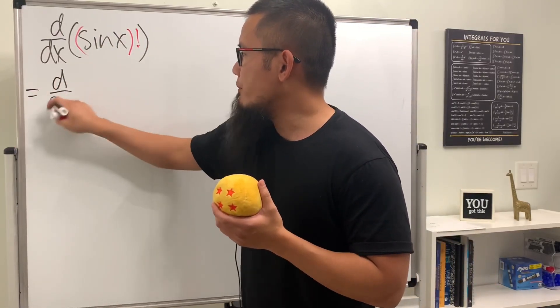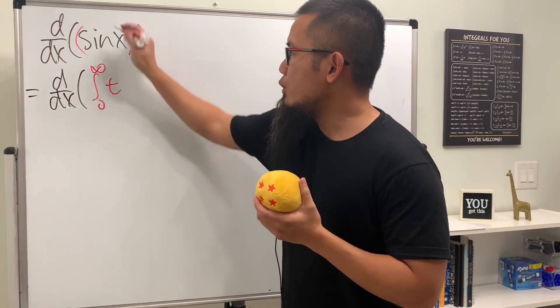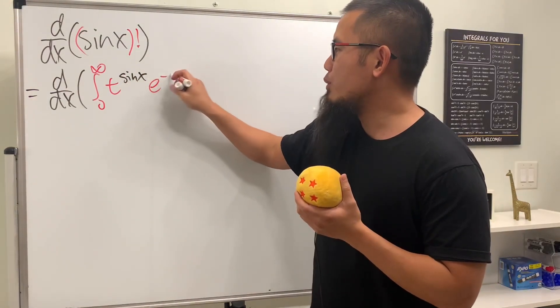So this right here becomes the derivative, and then we will have to use the integral definition for this, namely the integral going from 0 to infinity, t to the sin x power, and then we multiply by e to the negative t dt.